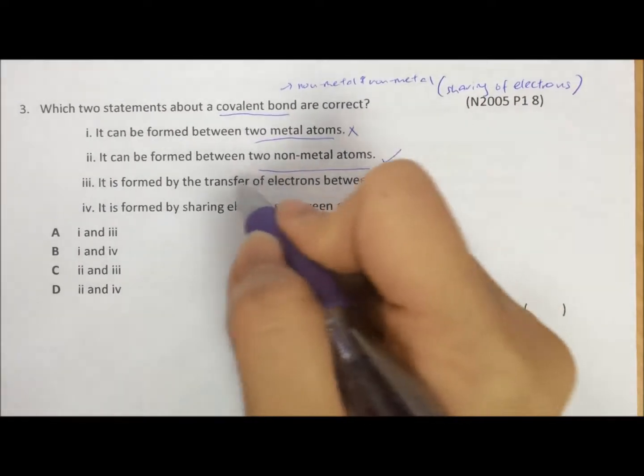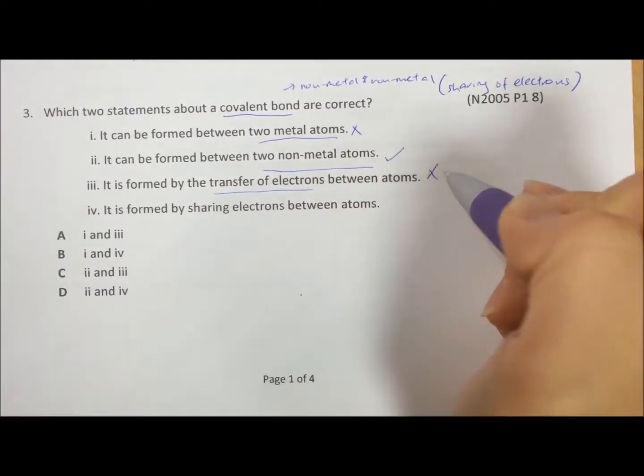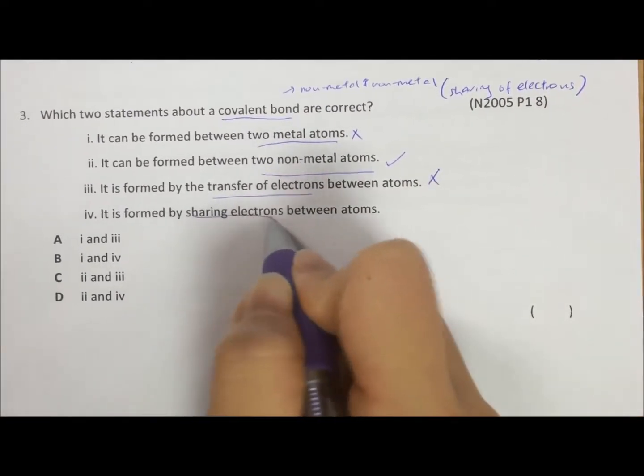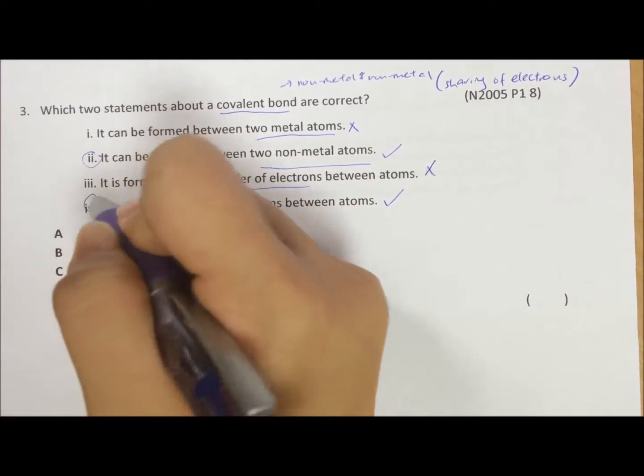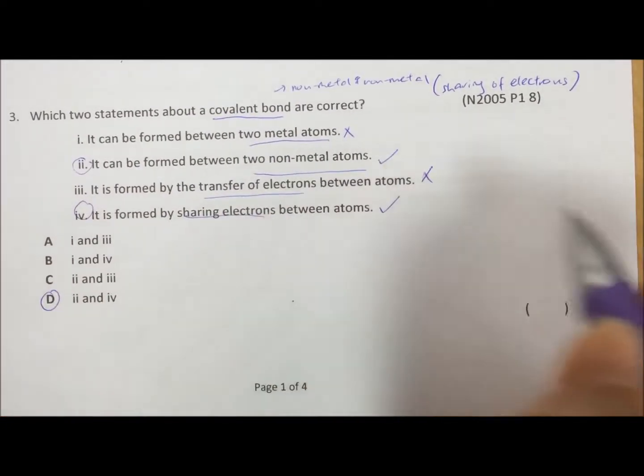So 1 is wrong, 2 is correct, 3 is wrong, 4 is correct. So if it's only 2 and 4, then the answer is D.